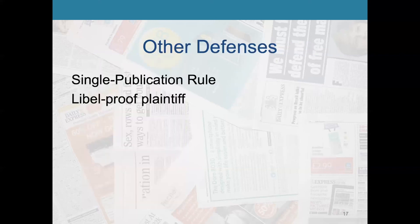There are some other defenses as well. There's the single publication rule, which is explained in the textbook. And perhaps my favorite is the libel-proof plaintiff defense, which basically states that someone's reputation is so bad to begin with that nothing the media reports could possibly damage that person's reputation anymore. That's just an interesting concept — the libel-proof plaintiff. Wrapping up, that's the video lecture for chapter five: different defenses that can be invoked if a media outlet is accused of libel.